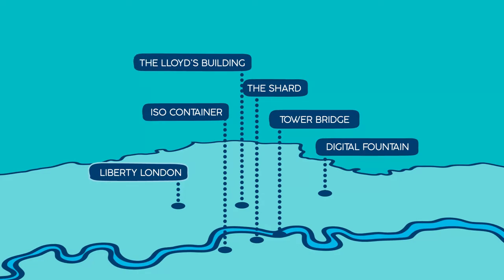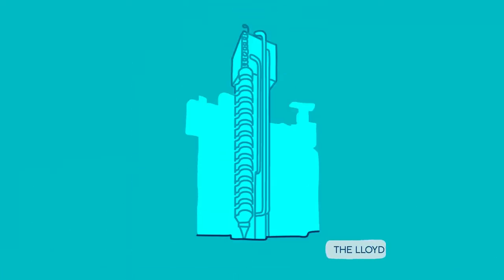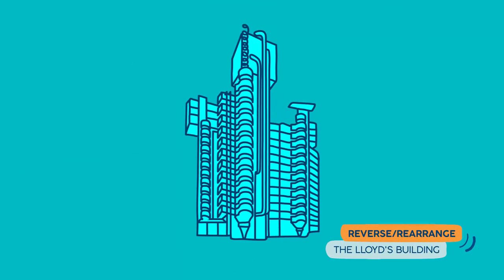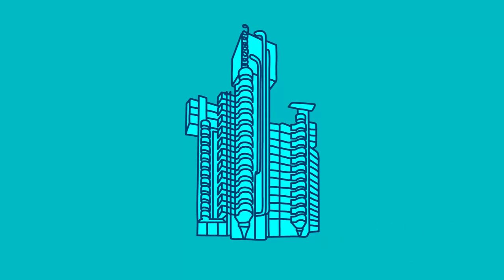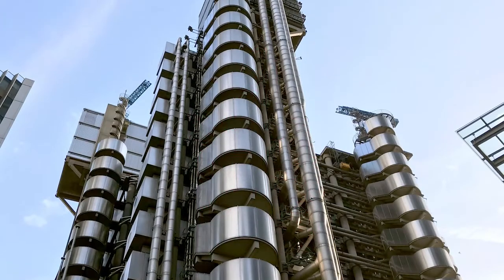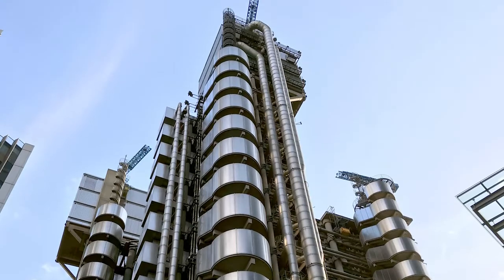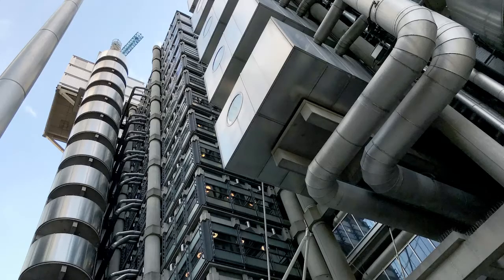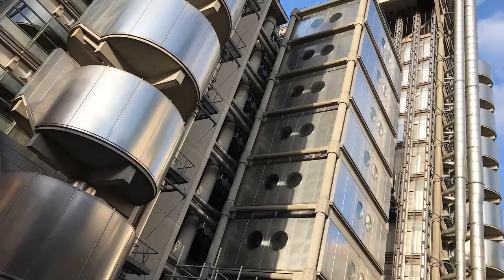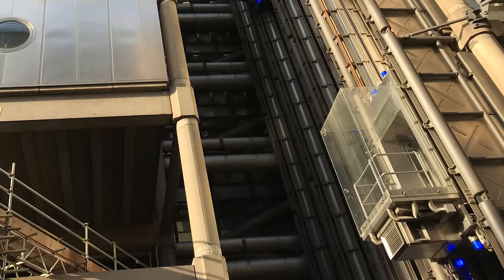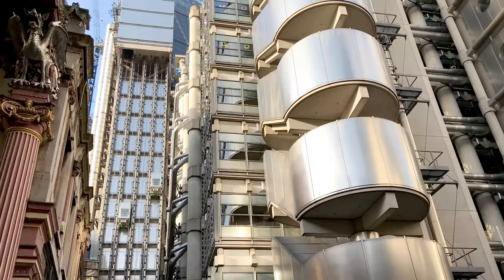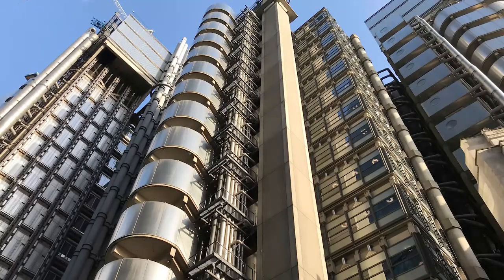Finally, let's conclude with the reverse and rearrange provocation by referring to the Lloyds Building, better known as the Inside Out Building. This represents a radical architectural example where the building has been completely reversed. Many of the services, including ducts and lifts, have been rearranged on the exterior to exploit the full potential of the internal capacity.